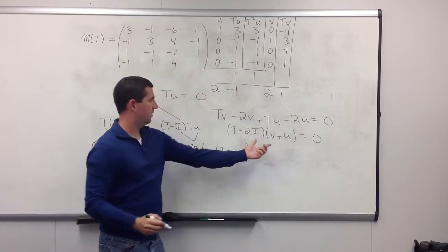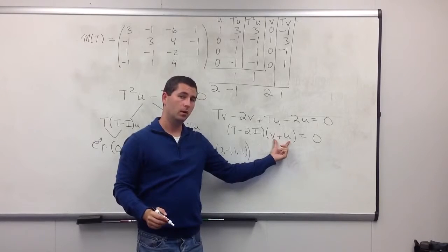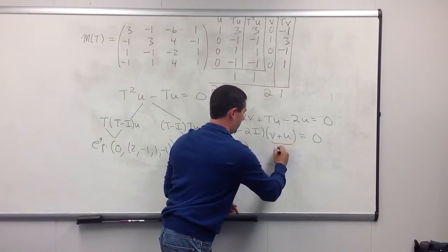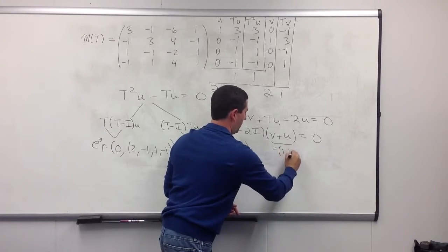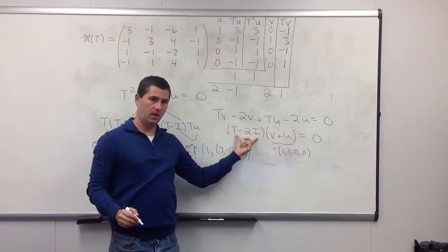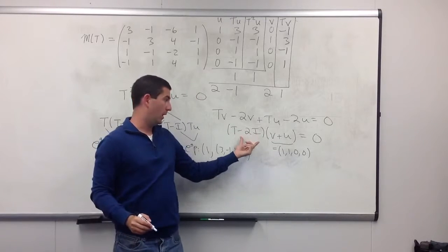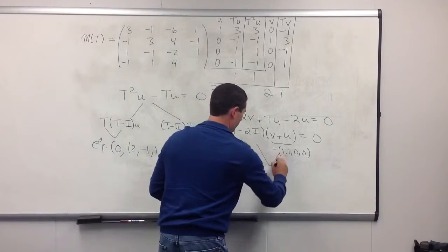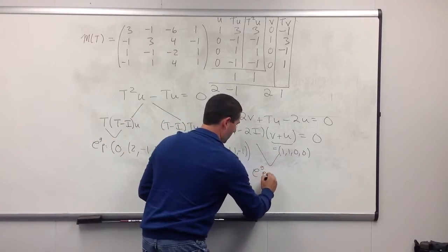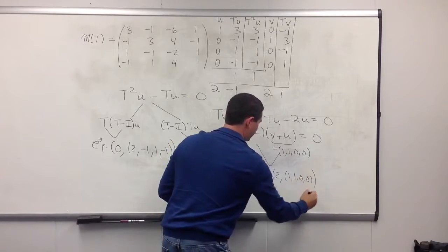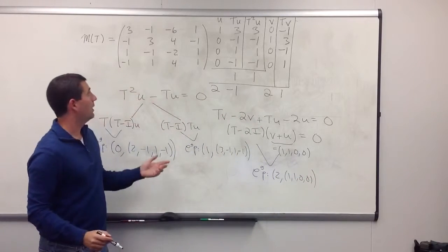So, that tells me that this vector v plus u, which that's easy to figure out what that is. This part here, that equals 1, 1, 0, 0, is going to be in the null space of T minus 2I. And so, well, I have an eigenvector now for the eigenvalue 2. So, I get an eigenpair, 2, 1, 1, 0, 0. Okay. So, I now have three vectors, but I need four. I want a basis.